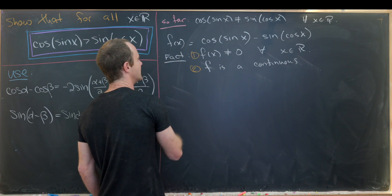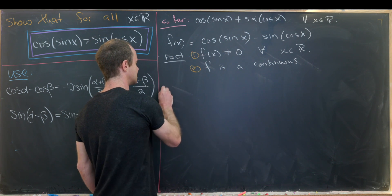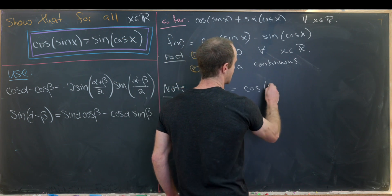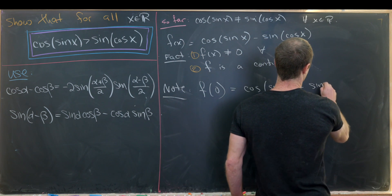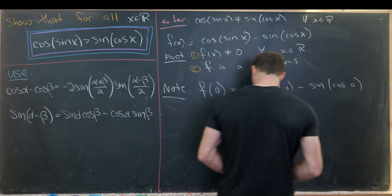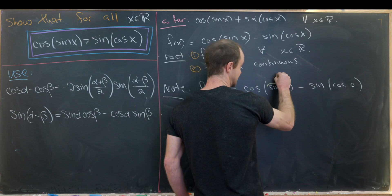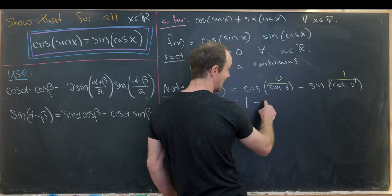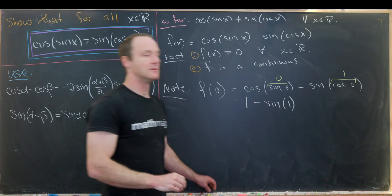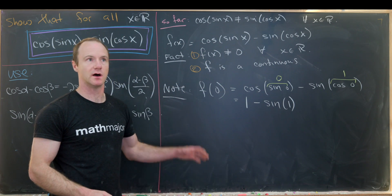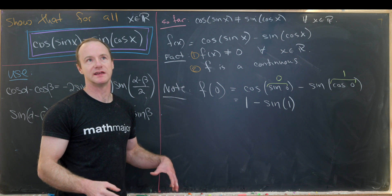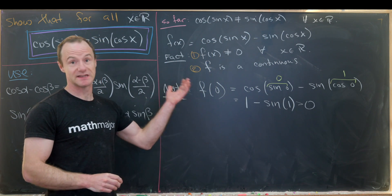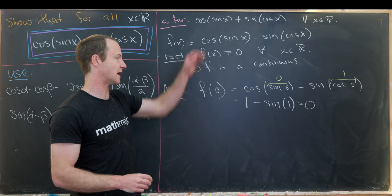Let's evaluate f at 0: f(0) = cos(sin 0) - sin(cos 0). Since sin 0 = 0 and cos 0 = 1, this equals cos(0) - sin(1) = 1 - sin(1). We know sine of 1 is not equal to 1, because sine equals 1 only at odd multiples of π/2. So f(0) > 0 — strictly bigger than 0, not just bigger than or equal to 0.